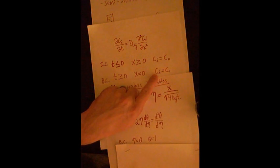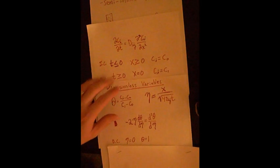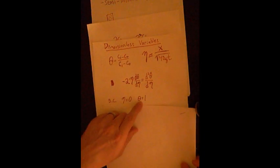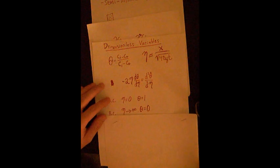At this same point, Ci is equal to C1. So if we put C1 right here, it would be C1 minus C0 divided by C1 minus C0, therefore that boundary condition would be theta is equal to 1. That's one of our boundary conditions.